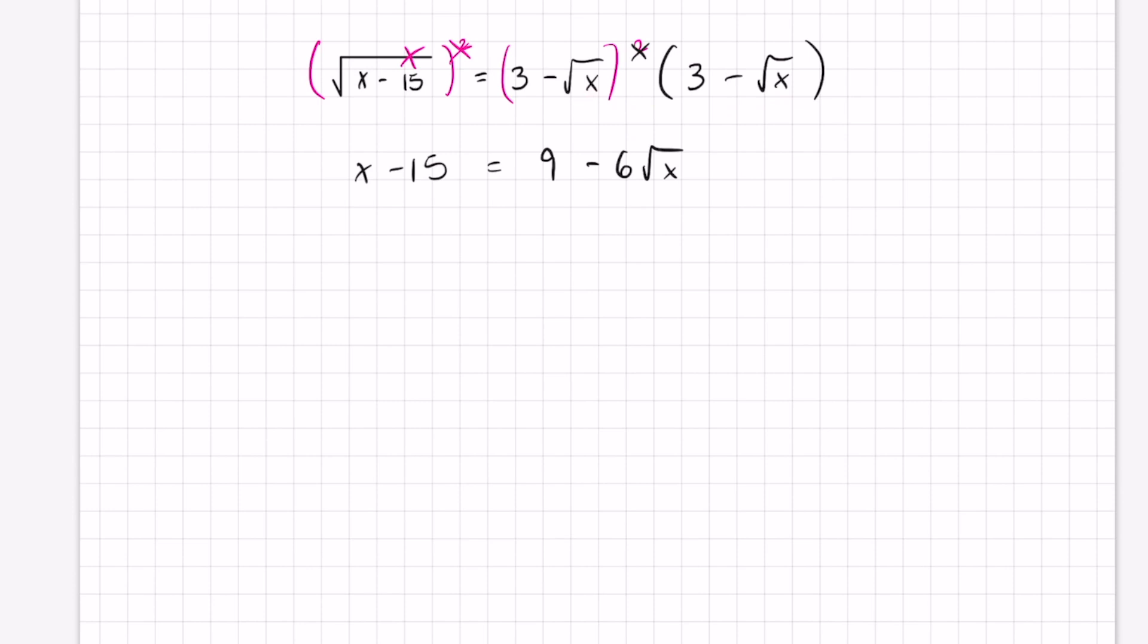Two negatives multiplied together give me a positive, and the square roots are going to cancel out, so I'm just left with x.